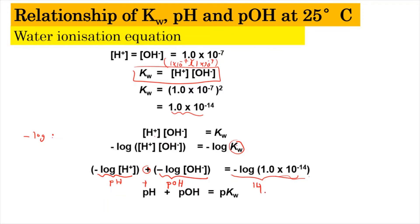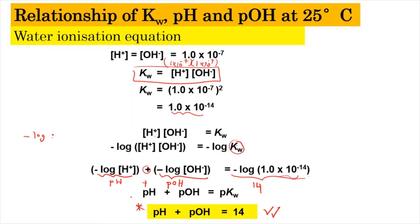So we get the very important equation: pH + pOH = pKw = 14. This equation is very important because it helps us solve problems. Now let's look at examples to calculate pH and pOH for various solutions.